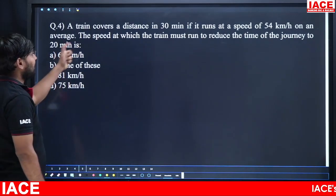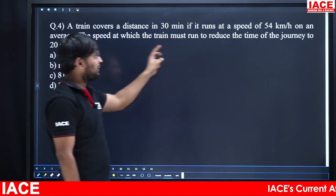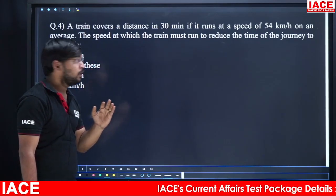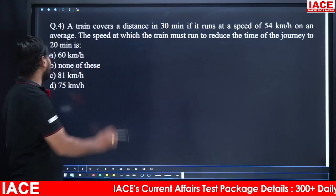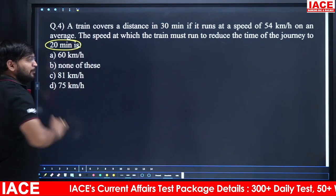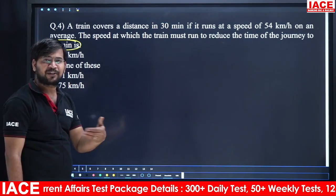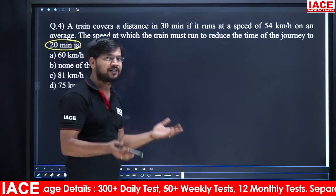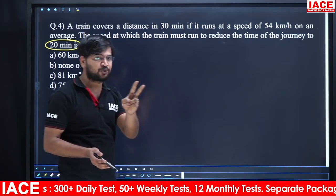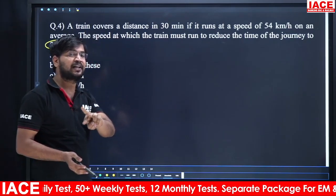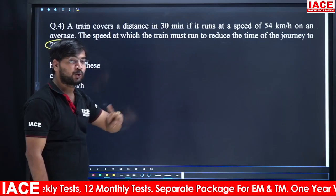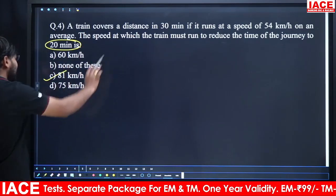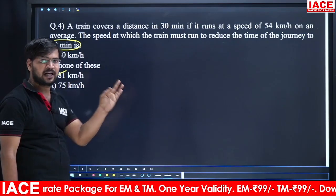A train covers a distance in 30 minutes at 54 km/h. We need the speed to reduce the journey to 20 minutes. Since distance is the same, speed and time are inversely proportional. Time ratio is 30:20 = 3:2, so speed ratio is 2:3. Two parts = 54 km/h, so three parts = 81 km/h. Option C is the right answer.